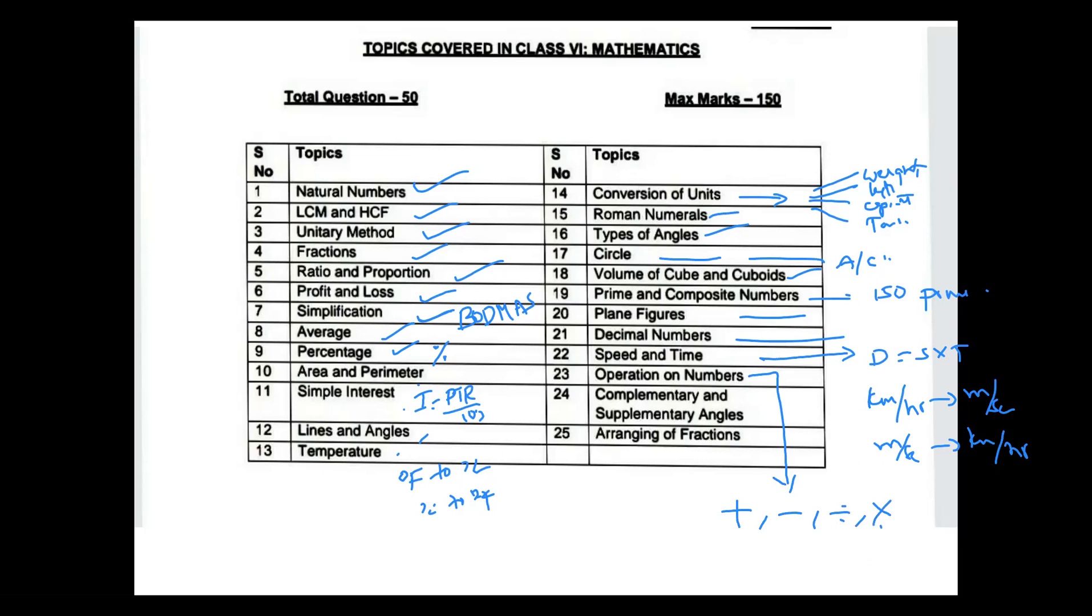Integers multiplication: minus into minus will become plus, plus into minus will become minus, this is very important. Complementary and supplementary angles - complementary is always equals to 90 degrees, supplementary is always equals to 180. This is very important.